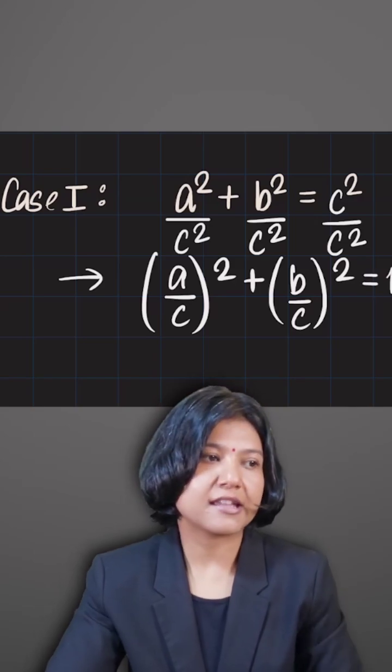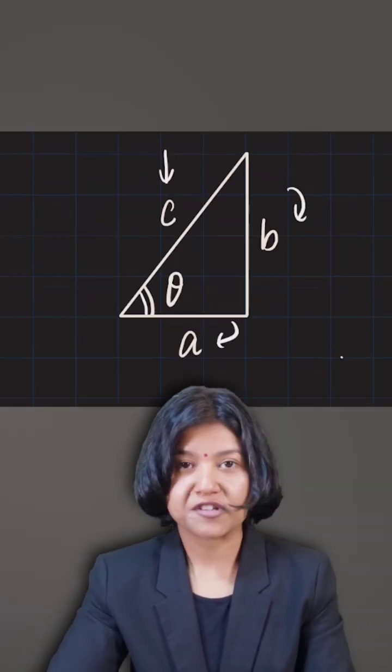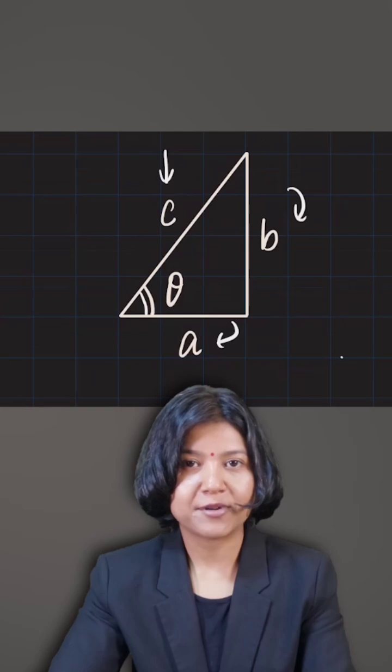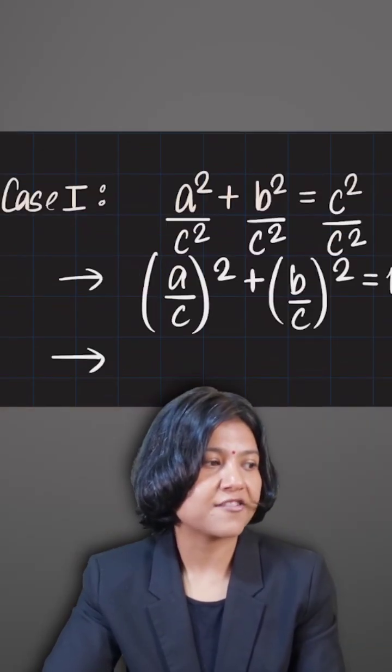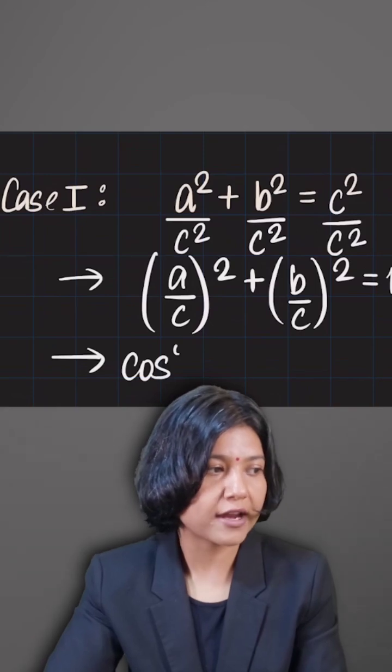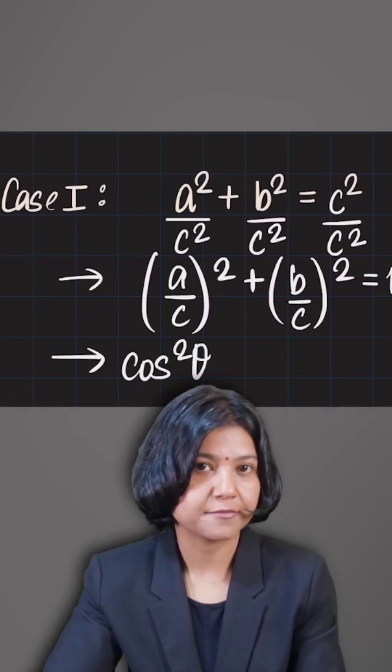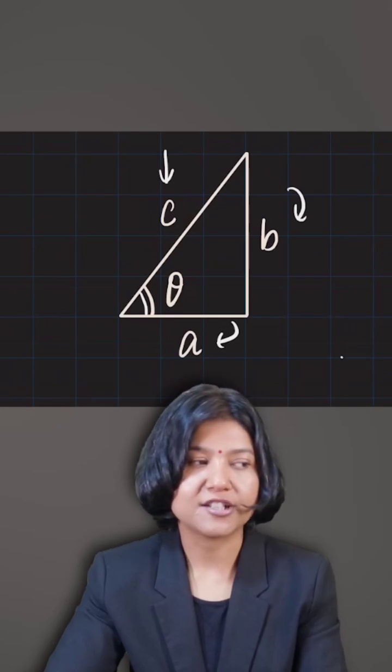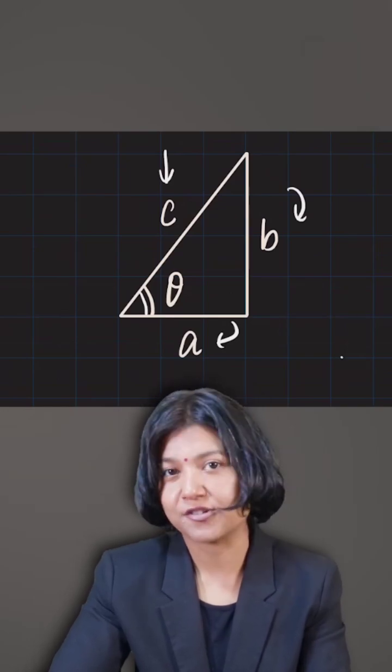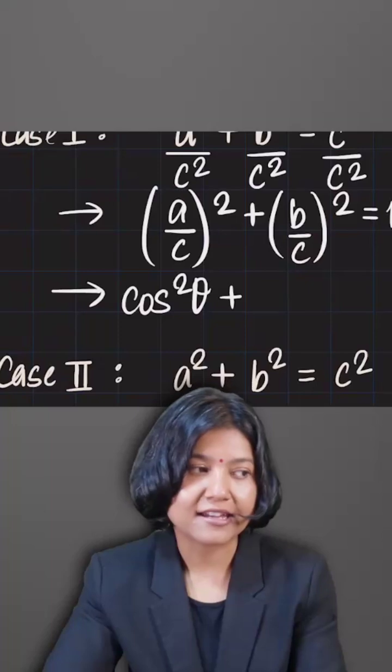Let's go back to the figure and see what is a upon c. If you look at a which is the adjacent and c is the hypotenuse, we call that ratio cosine. Instead of writing a upon c, I'll write this as cos squared theta. b upon c, where b is the perpendicular and c is the hypotenuse, is called sine, so we call this sine squared theta.